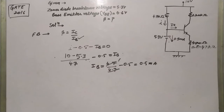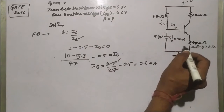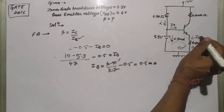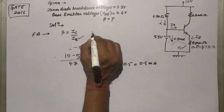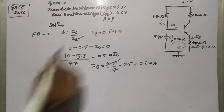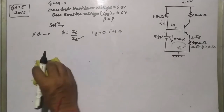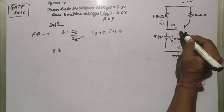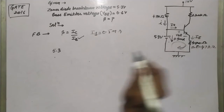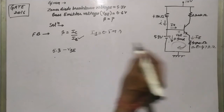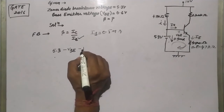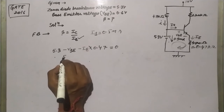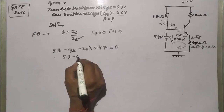IB has been calculated as 0.5 milliamperes. Now let's apply KVL on the other side of the circuit, where current IE flows. Applying KVL: 5.3 plus 5.3 minus VBE minus IE times 0.47 equals zero. VBE is 0.6 volts.